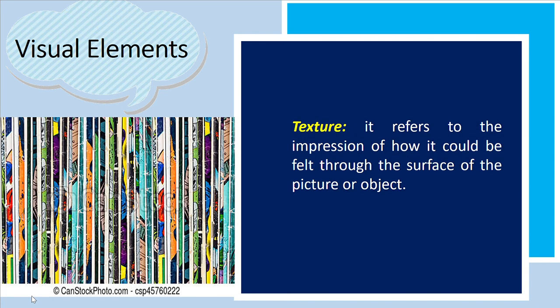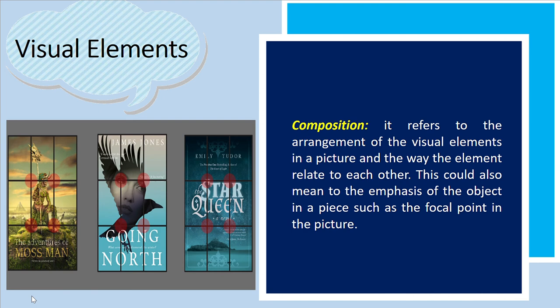Texture refers to the impression of how the surface of the picture or object could be felt. In picture books, textures presented are not tactile but implied — whatever the images show, whether rough or soft, also provides a message to the image in the story. Composition, otherwise known as the focal point, refers to the arrangement of visual elements in the picture and the way they relate to each other — emphasizing certain objects or ideas in the piece.